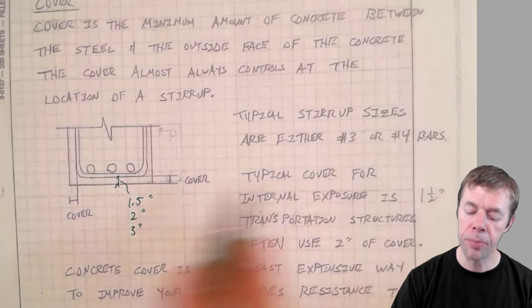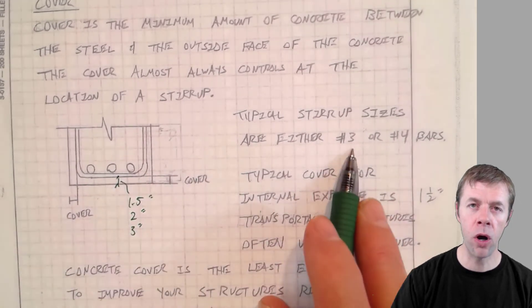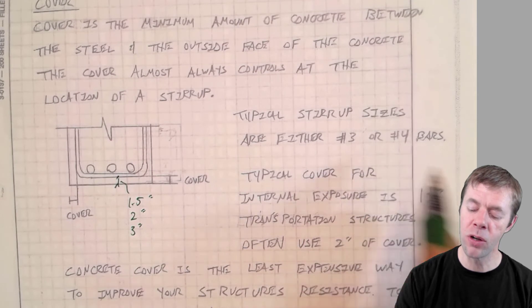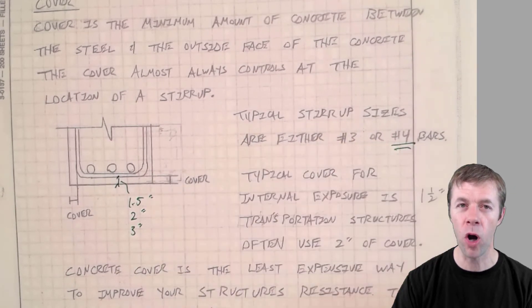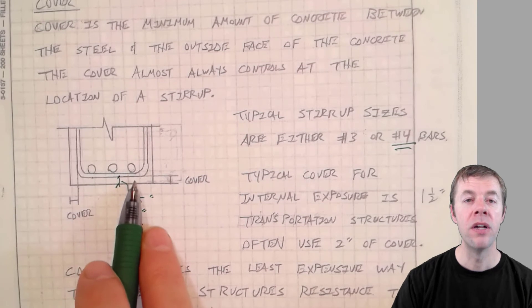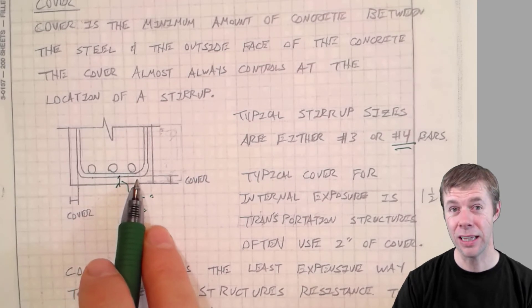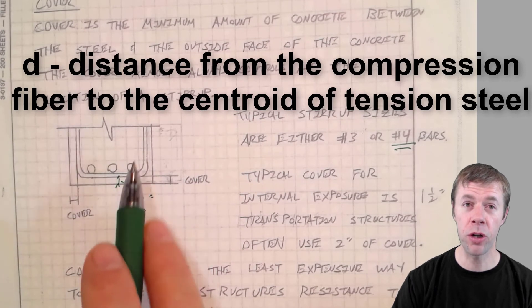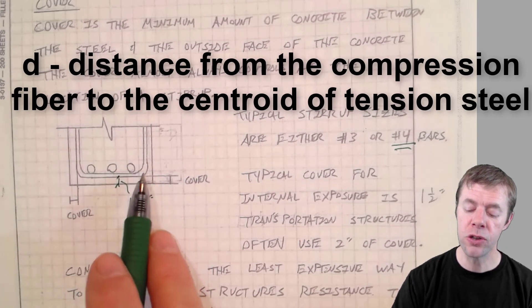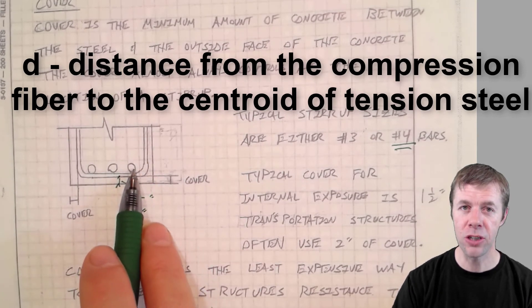And then that stirrup is usually a number three bar or a number four bar. Almost always a number four bar. And this is helpful to calculating D. Remember what D is? D is the distance from the compression fiber to the centroid of your tension steel.